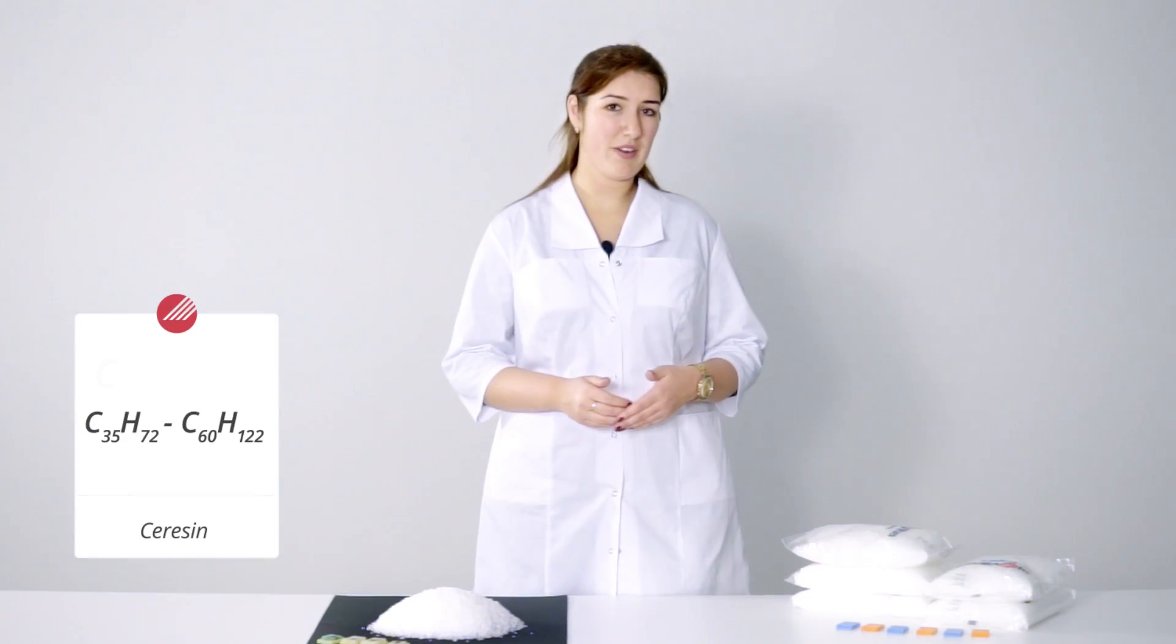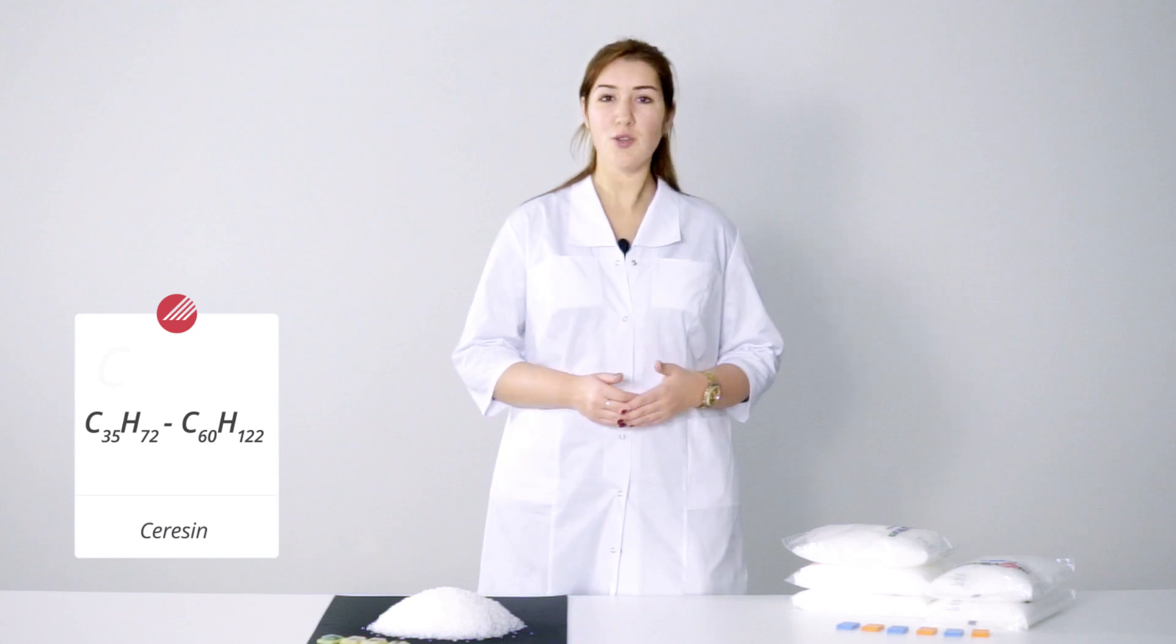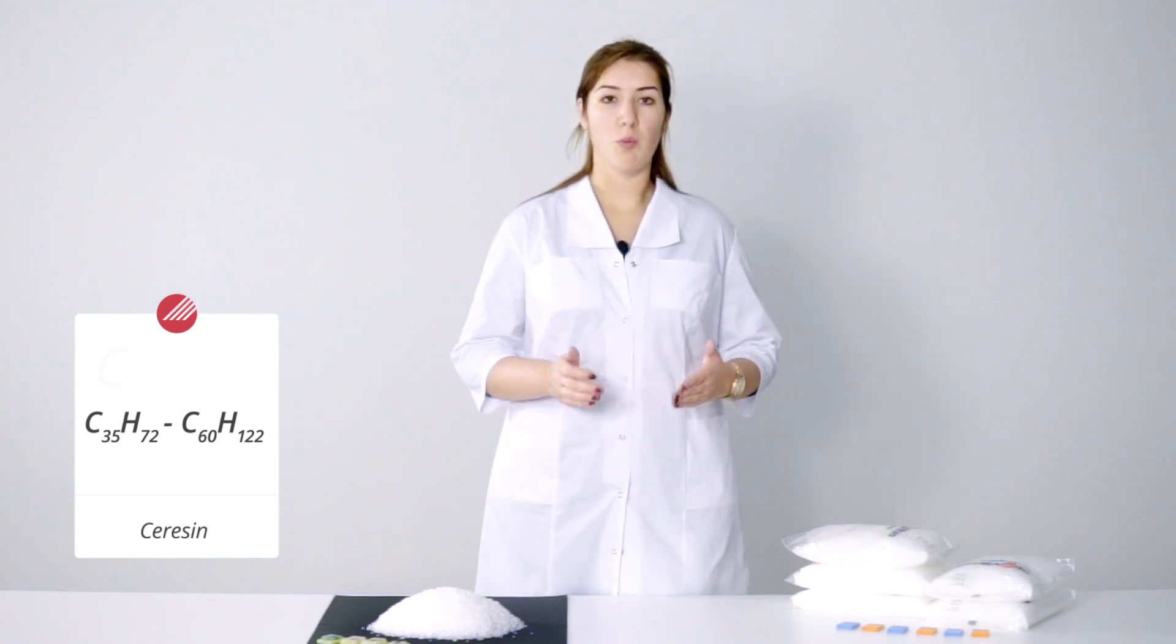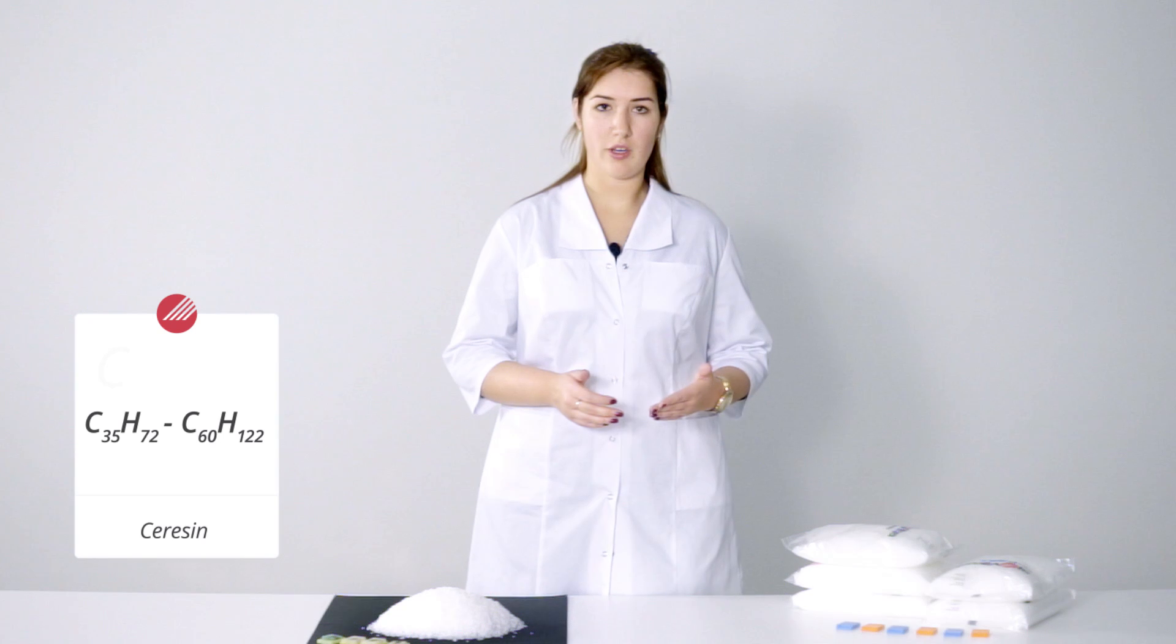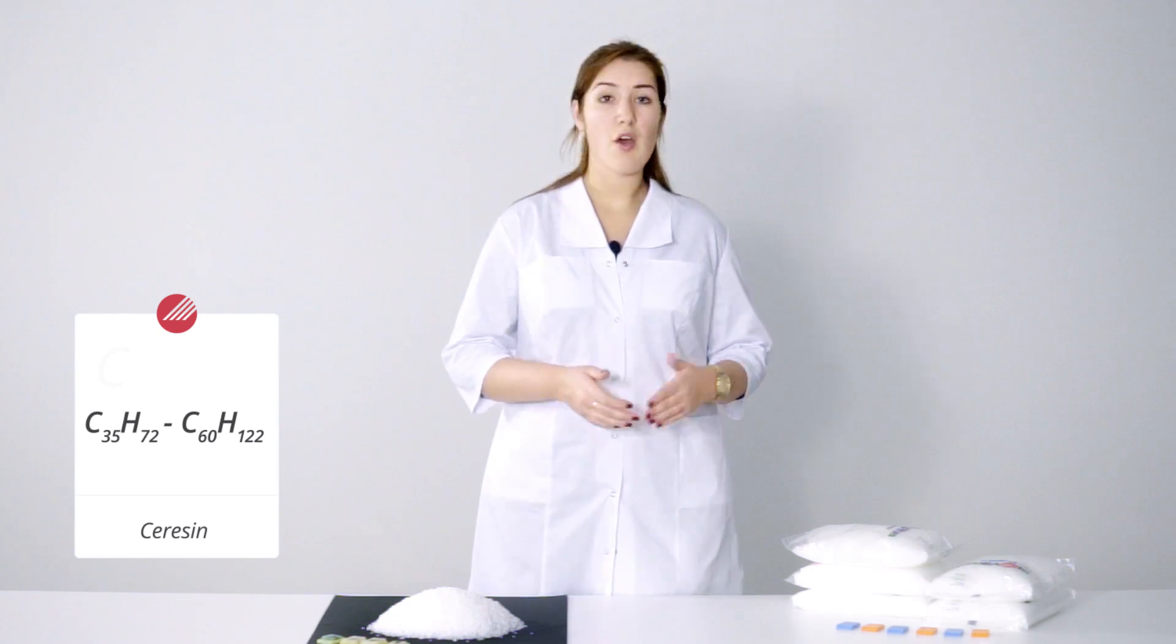Ceresine or microcrystalline paraffin is a mixture of saturated hydrocarbons with more carbon atoms in a molecule than in normal paraffin, from 35 to 60. It has smaller molecules than long straight paraffin. It creates branches in its structure increasing hardness, strength and elasticity.